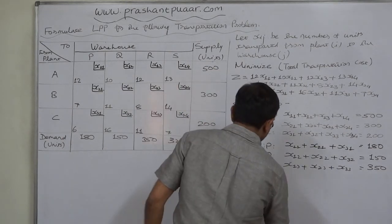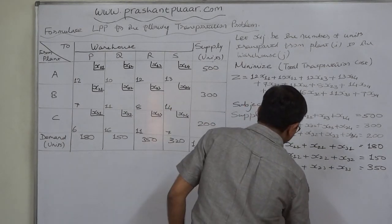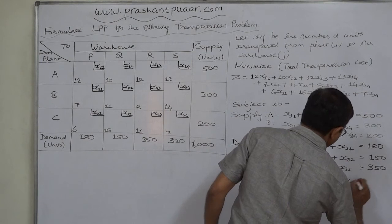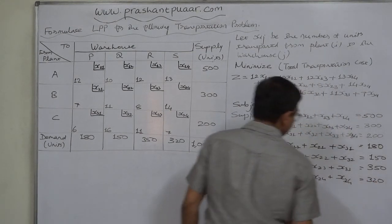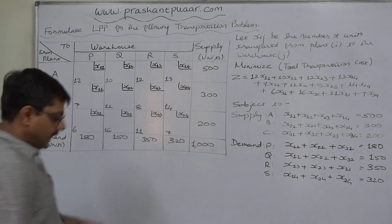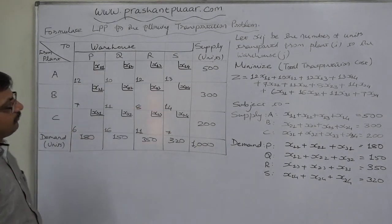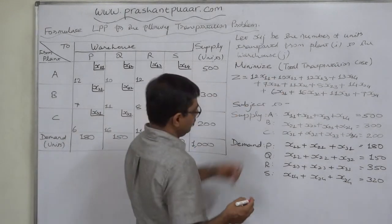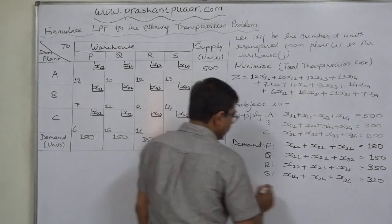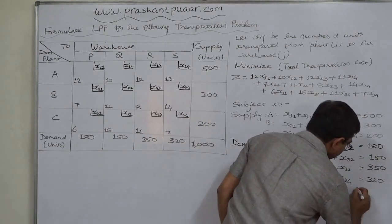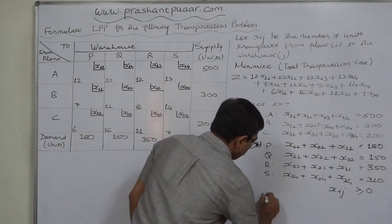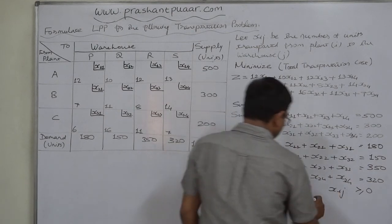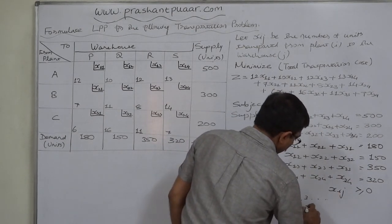For demand point S: x14 + x24 + x34 = 320. Since all xij represent the number of units, they can never be negative. Therefore the non-negativity condition is: all xij ≥ 0, for i = 1, 2, 3 and j = 1, 2, 3, 4.